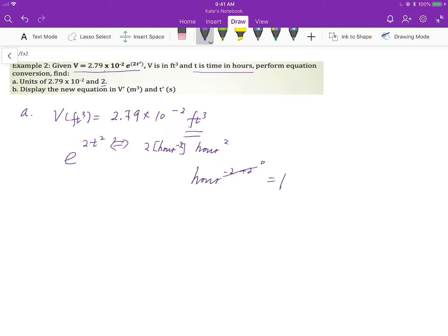Then we get a constant. Therefore, the unit for 2 is hour to the negative 2.